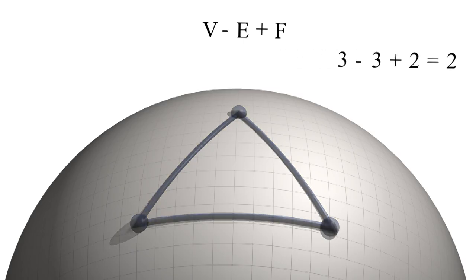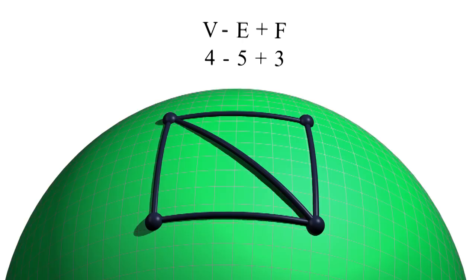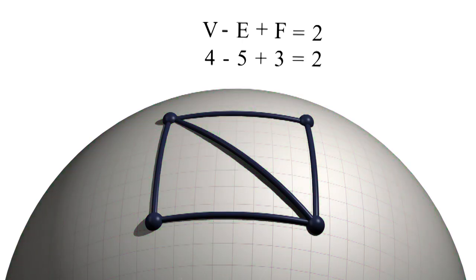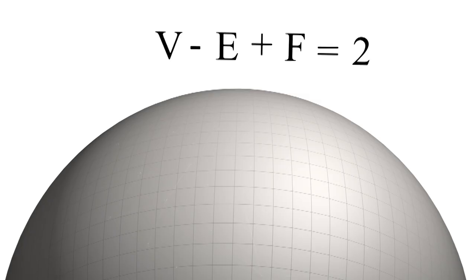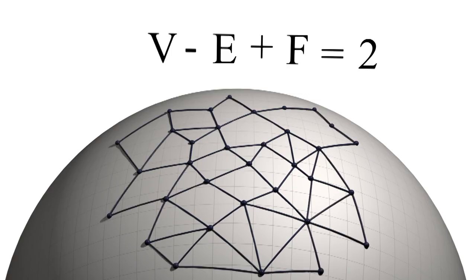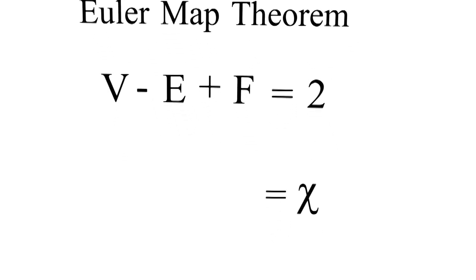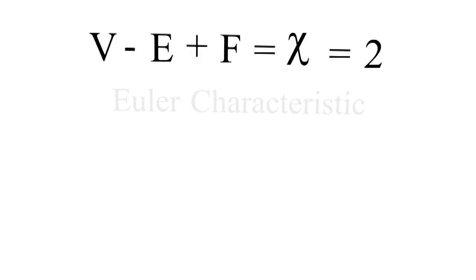If we draw two triangles, we have four vertices, five edges, and three faces. V minus E plus F equals two again. This equation is always true — V minus E plus F equals two for any connected plane or graph. This is called the Euler map theorem. It's not hard to prove, but I'll save that for my next video. This number, V minus E plus F, has a special name: it's called the Euler characteristic.